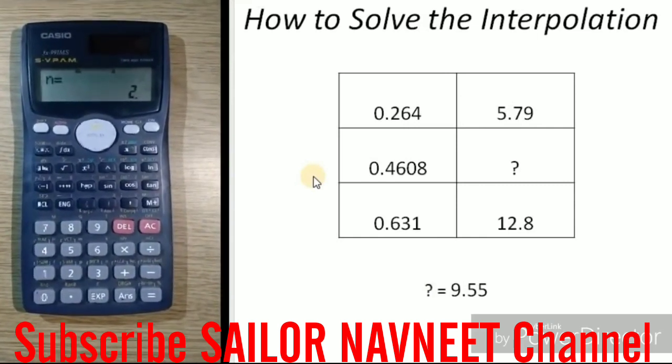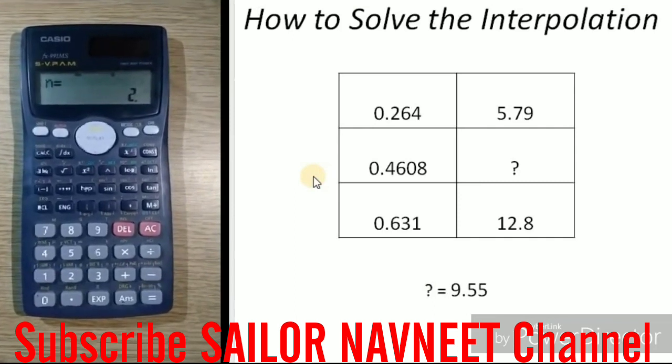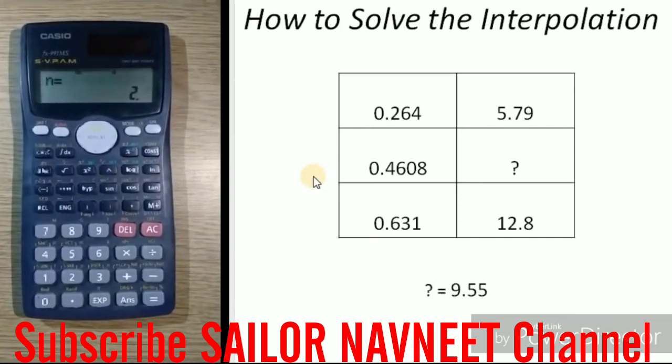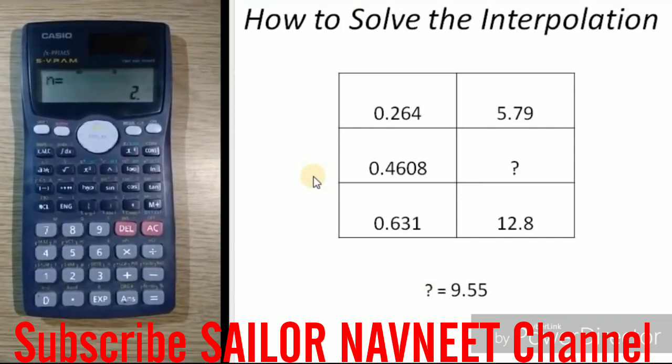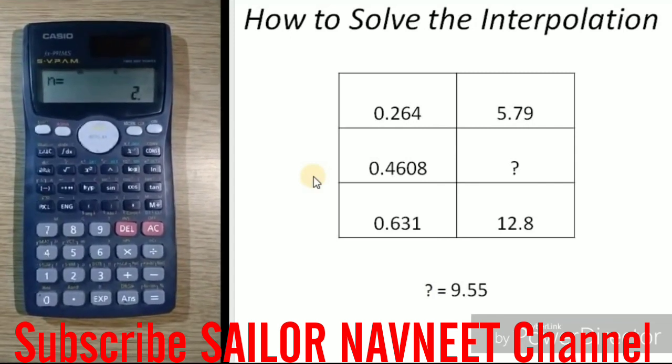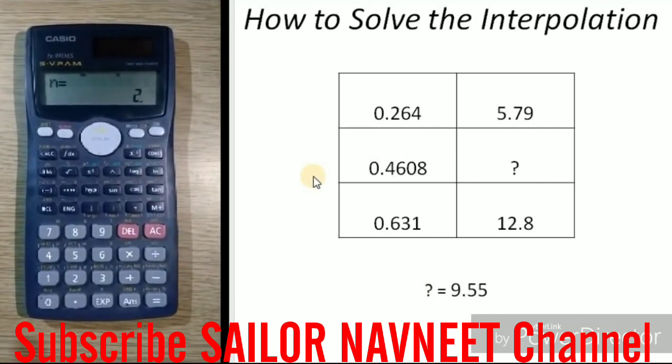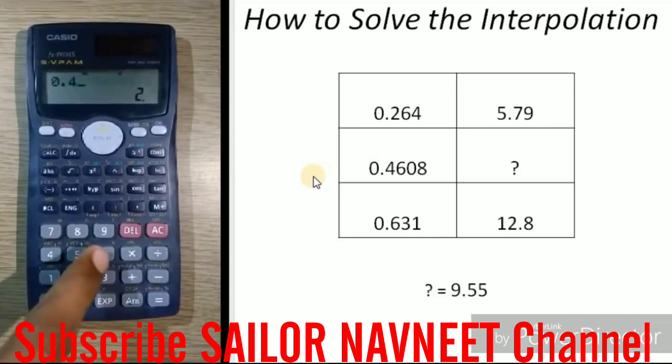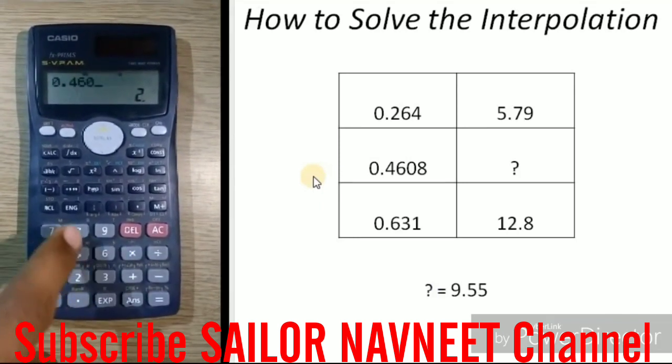Then, after this, all the values of our interpolation is fitting in the calculator. After this, for finding the values of our third interpolation, means that, first of all, enter the first value, that is 0.4608.